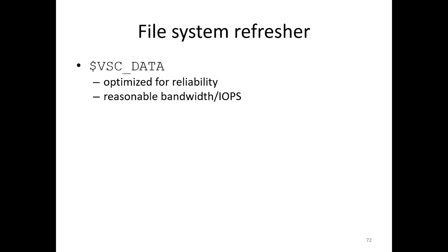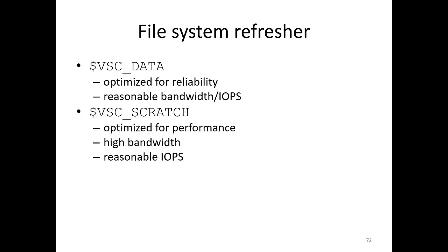A short file system refresher: we have VSC Data, which is optimized for reliability. It has reasonable bandwidth and IOPS — not very fast, not high bandwidth — but it is intended to be reliable and optimized so that data loss is minimized or preferably non-existent.